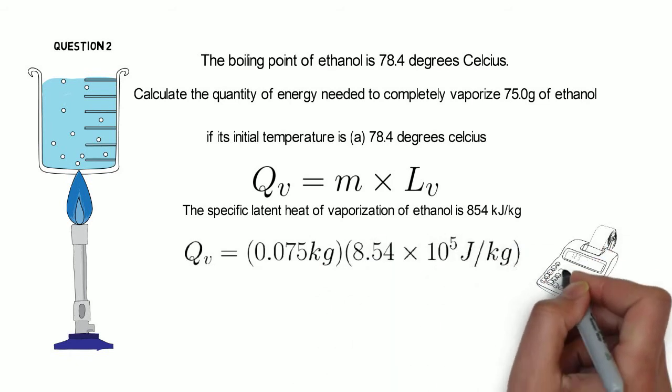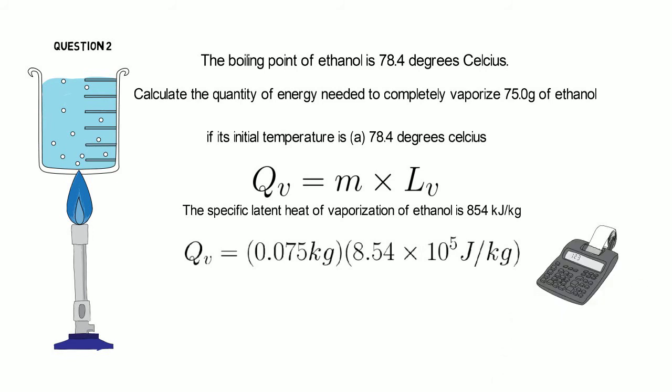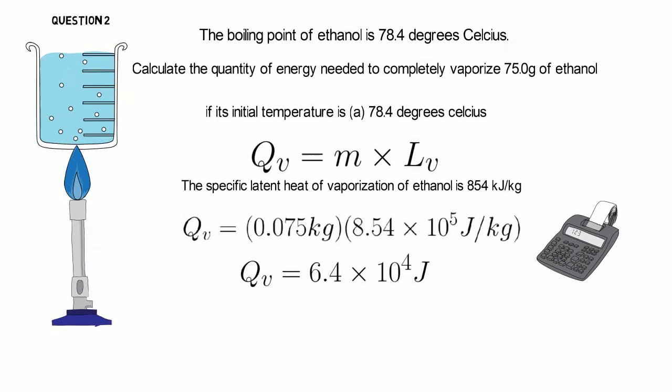Once we plug in our values and punch it in our calculator, we get our heat to be 6.4 × 10^4 joules.